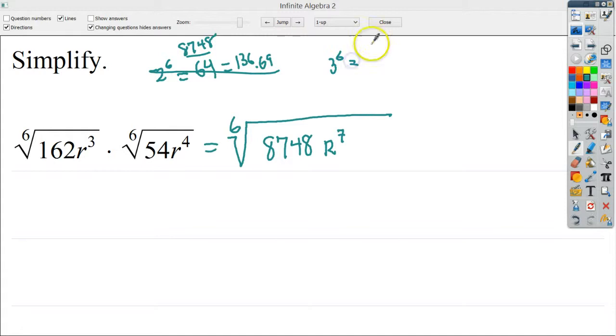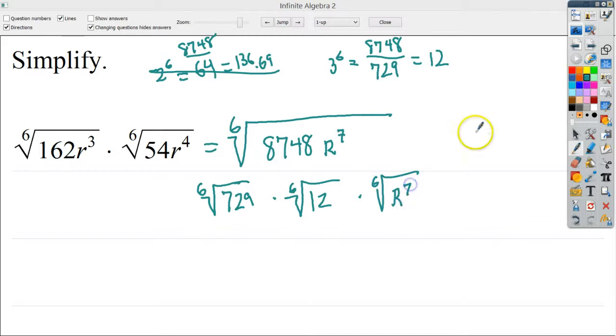So then I tried 3 to the 6th. So I ended up doing 8,748 divided by 729. And when I did that one, it ended up working, and it gave me 12. So I break this 8,748 up into the 6th root of 729 times the 6th root of 12. And then from here, I brought down my 6th root of r to the 7th. From here, I know that this is 3, because I found it out that way.